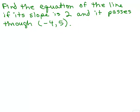So here's an example. Find the equation of the line if its slope is 2, and it passes through (-4, 5). One way of doing this is getting out a big piece of graph paper, plotting the point (-4, 5), using the slope to draw a really straight line, and seeing where it passes through the y-axis, and then you would know what b is, and be able to plug it in. Or we can do this algebraically. So here's an algebraic way of doing this.